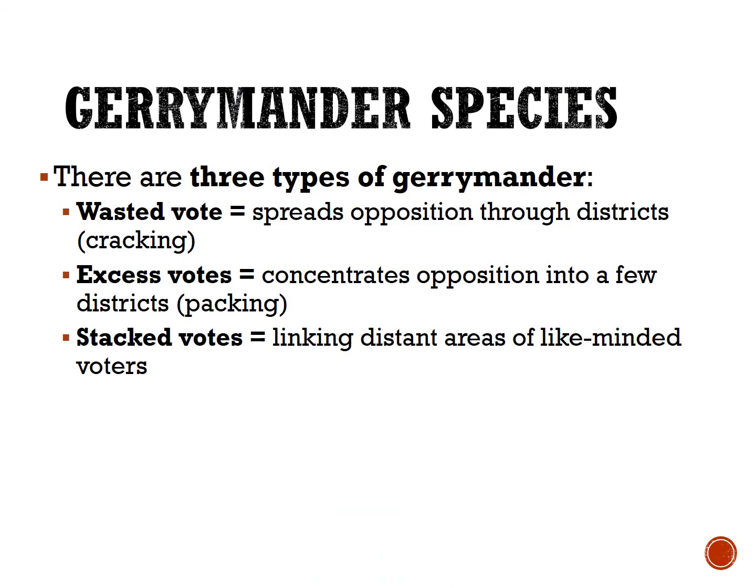There are several ways politicians gerrymander. The wasted vote — also known as cracking — disperses support for the opposition so that the opponent loses by a slim margin. The excess vote — known as packing — puts a few districts with a strong majority of the opposition, where votes cast are well above what is needed to win, wasting those votes. Then there is stacking, which links geographically distant areas to create a majority where one may not exist, which is where some very elongated congressional districts come from — but it can also create a majority-minority district.